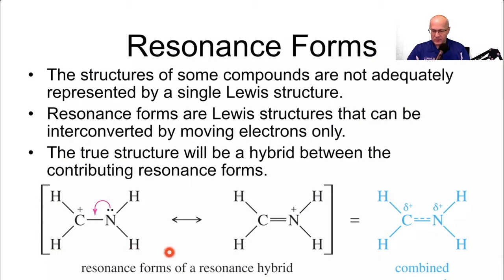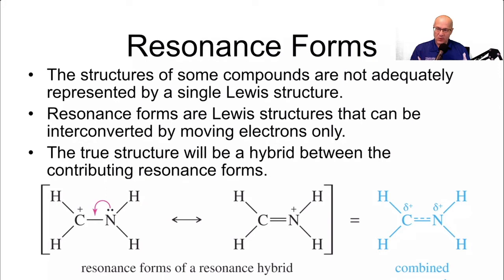Right here are resonance forms. There's this one and then there's this one, and they're not equal — certainly not equal in weight. We'll get into how you weight resonance forms in a moment, but they are both significant and both contribute to the overall hybrid structure. Notice this carbon has a plus charge and a sextet, and adjacent to it is an atom with lone pairs.